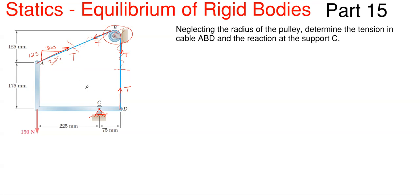Now let's add some assumptions for our reactions at C since it is a pin. I'm going to assume that C sub Y is going in the downward direction simply because the two tension forces are going up and I'm assuming they're going to be overpowering the 150. If you assume it wrong, it's perfectly okay — your answer will just come out as a negative. I'm also going to assume that C sub X is going to the left, because this tension portion has a vertical and a horizontal component, and since it's going up and to the right, C sub X has to be going left to cancel that.